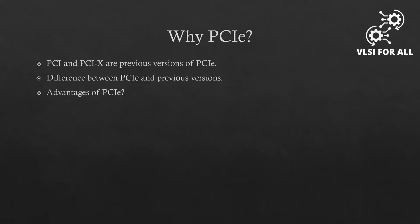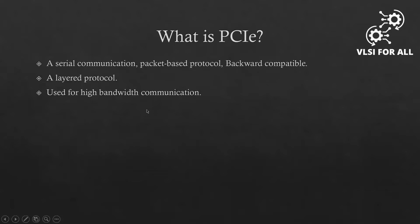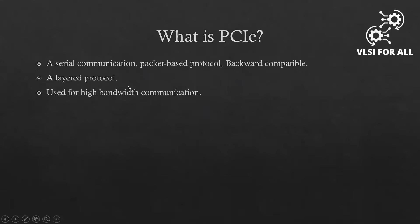PCIe is a serial communication protocol, which decreases the pin count. It is also a packet-based protocol, meaning there are defined boundaries when sending data. It is backward compatible — through PCIe we can also communicate using PCI or PCIx, so it supports previous versions too. PCIe is a layered protocol with three layers, which we'll discuss later. It is used for high-bandwidth communication and provides much higher throughput than previous versions.